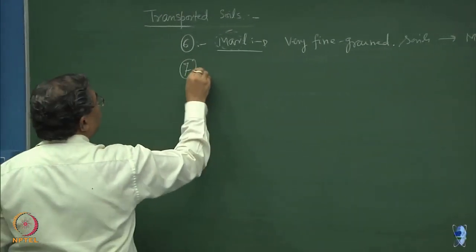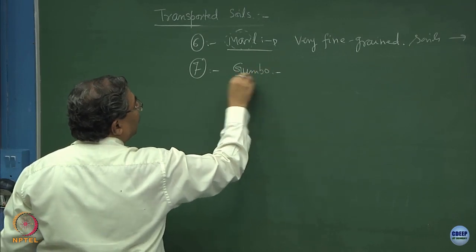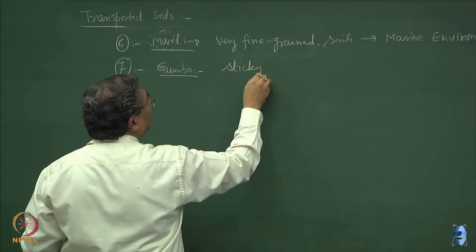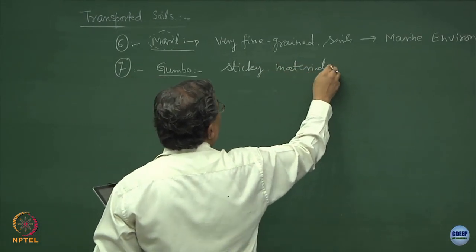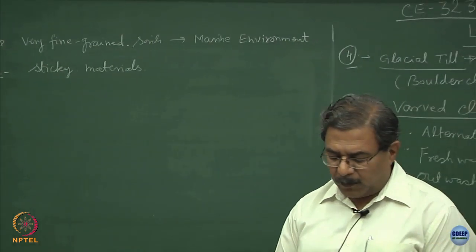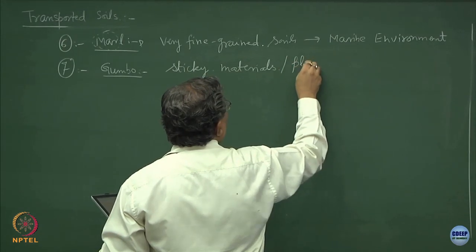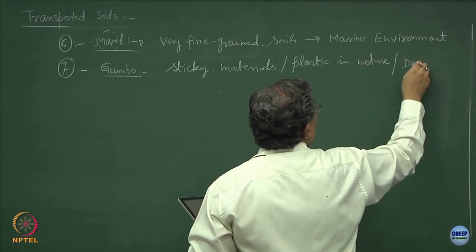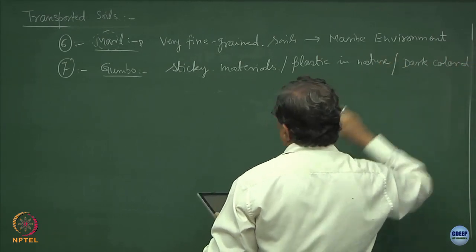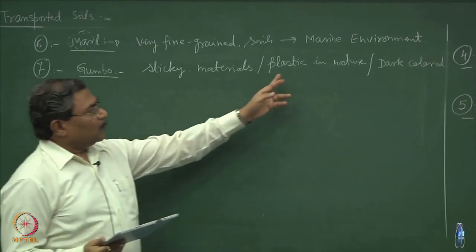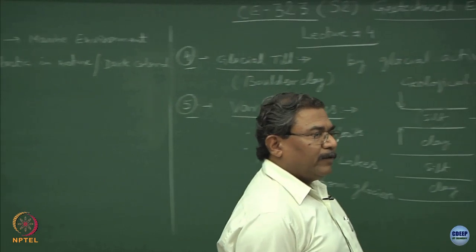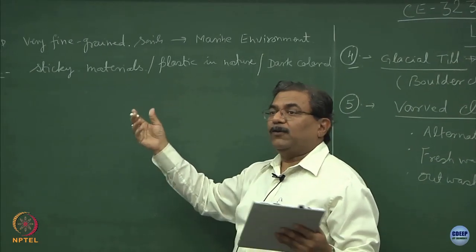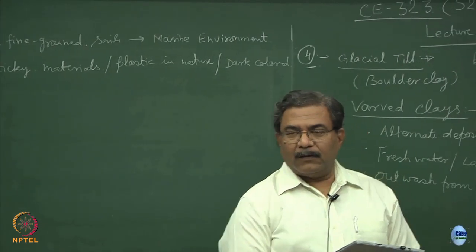There is another category known as gumbo — G-U-M-B-O. These are very sticky materials. When soil is sticky, it is also going to be plastic in nature and dark coloured. The word plastic here means the material can be moulded the way you want — like when you take soil as a child, add some water, and make a ball out of it. That comes because of the plasticity of the material.